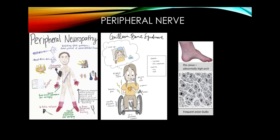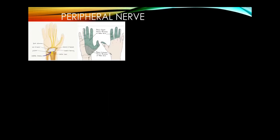If you're given a hereditary neuropathy — autosomal dominant — with high arched feet and distal atrophy, that is Charcot-Marie-Tooth. Biopsy shows onion bulb formation, though now we have genetic testing for this.